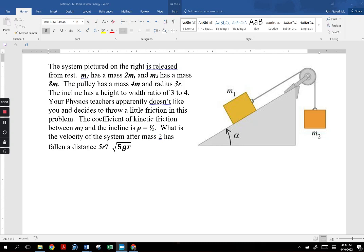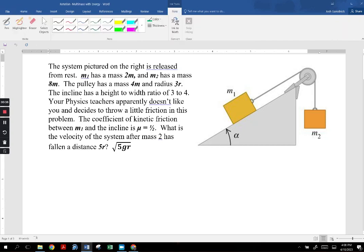It's about the use of energy when it comes to multi-mass systems, and we are going to include rotation. In the past, we've already done this with dynamics, including rotation, and in the past, before that, we did multi-mass systems with energy, but the pulley had no mass. So now we have to deal with a pulley that has mass, and we're going to be using energy. It's actually the same strategy as the old one when the pulley did not have mass.